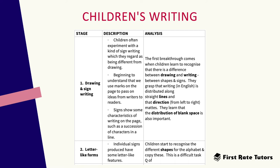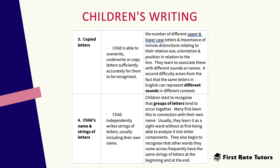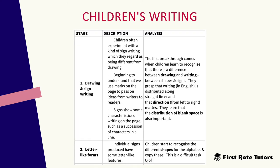Children learn that writing in English is distributed along straight lines and direction — from left to right — matters. They also learn that the distribution of blank space is important. In the second stage, letter-like forms, individual signs are produced and some have letter-like features. Children start to recognise the different shapes for the alphabet and copy these.